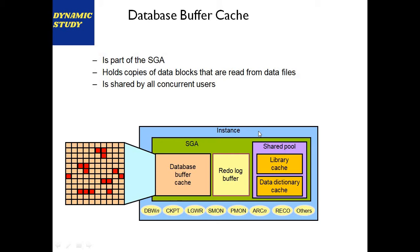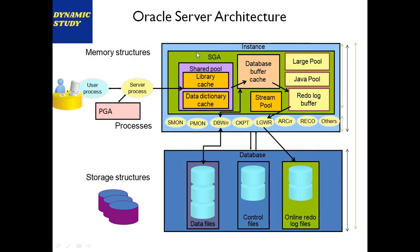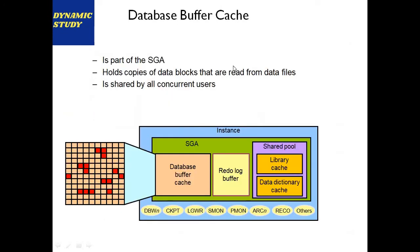Database buffer cache is part of SGA and holds copies of data blocks read from data files. It is shared by all concurrent users. If data is not already in the buffer cache, DBWriter brings it from physical storage into the buffer cache, then transfers it to the requesting user. Since it is part of the SGA, all 100 concurrent users on the same database can see data simultaneously.